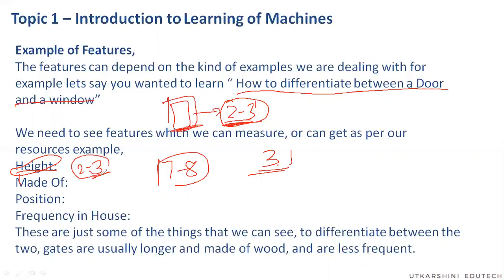This is how most computers learn — they don't learn what a window or a chair looks like; they learn the features: what is the height, what is it made of, where is it located in the house, how many of them are there. And if they find a pattern among these, that is what they learn. So if you've understood this, take an example of any two things and ask any five or seven-year-old to differentiate between them.